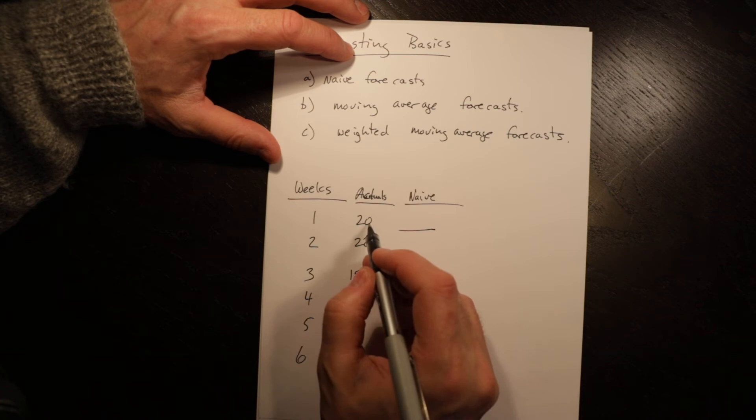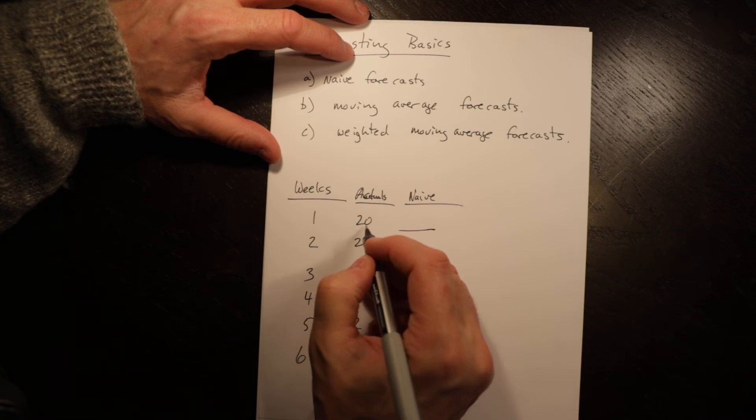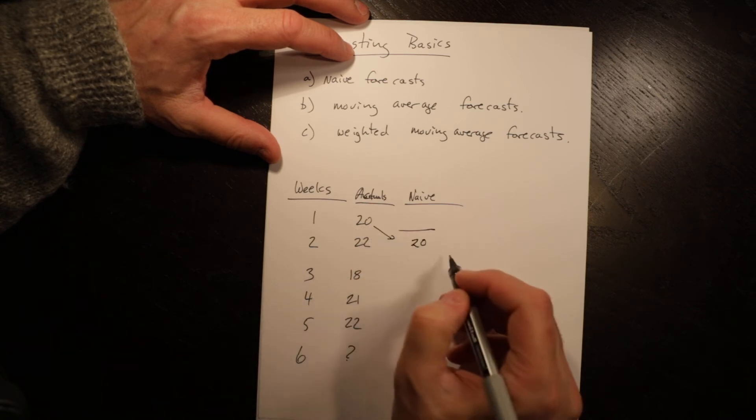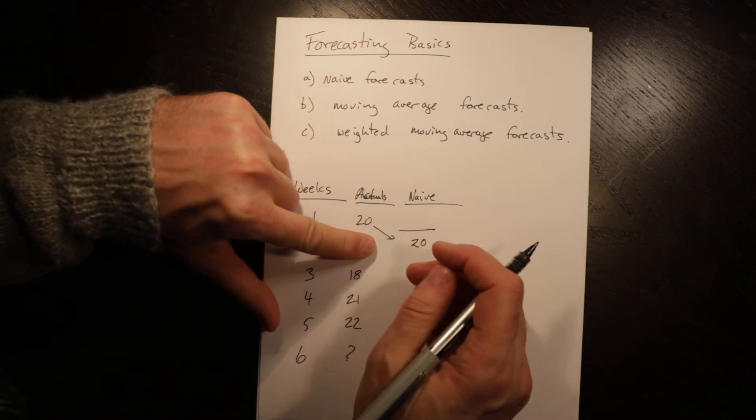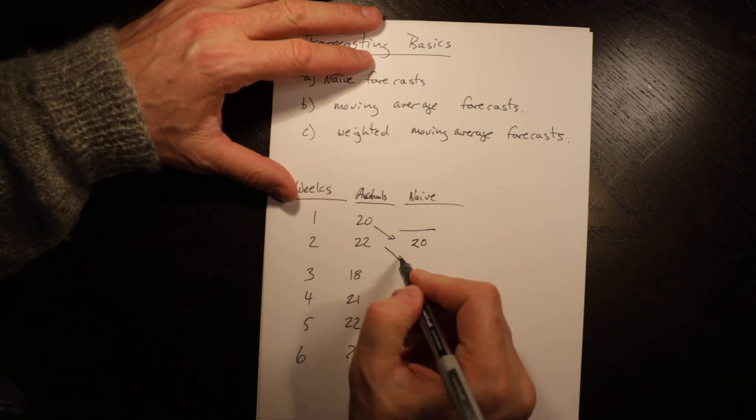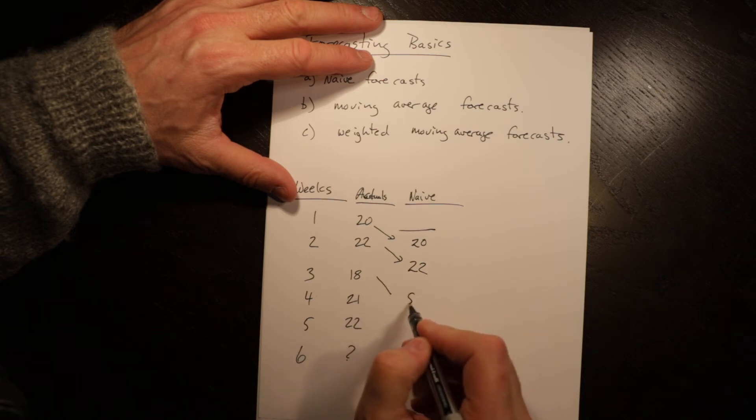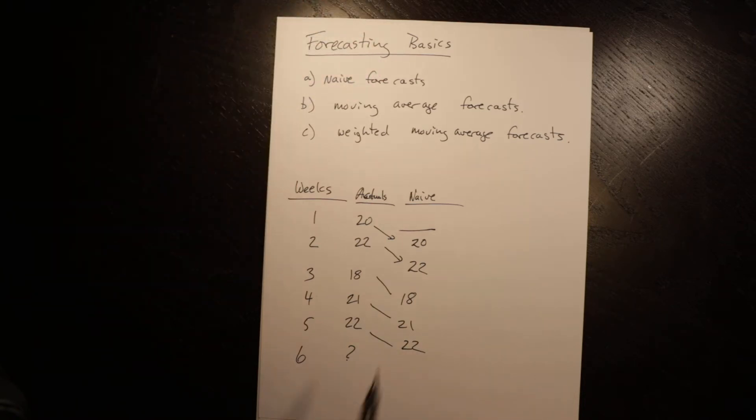What you'll see is often people just use, move it over. So for the naive forecast, we use period one sales of 20 to forecast period two. We would have done that when we didn't know what actual was, and then similarly 22, 18, 21, and 22. So it really is a relatively simple approach, just uses the previous period.